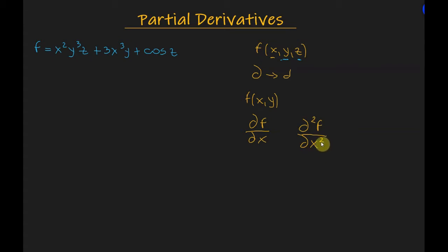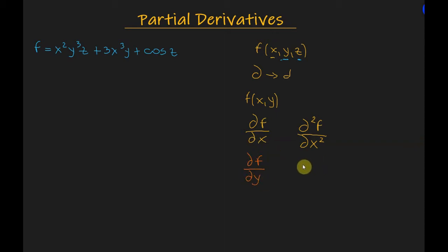A partial derivative of the function with respect to y is written as ∂f/∂y — this is a first-order partial derivative — and the second-order partial derivative is ∂²f divided by ∂y squared.